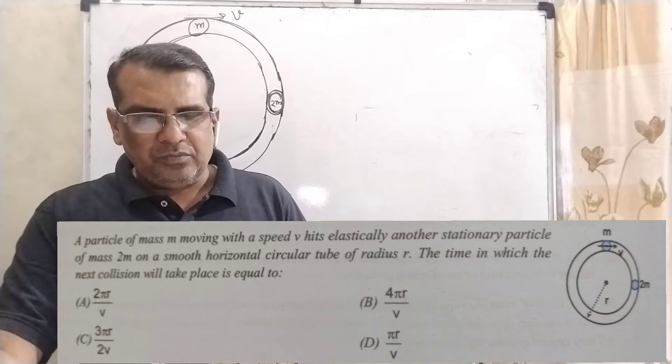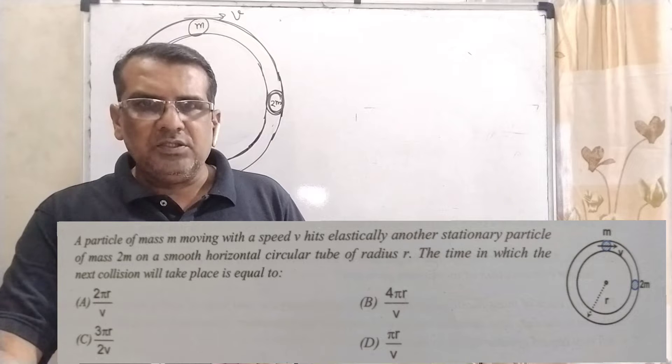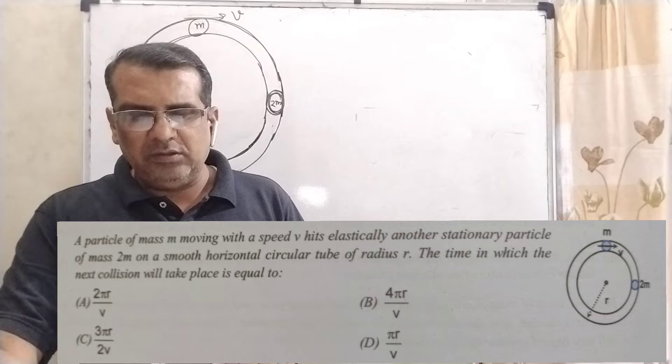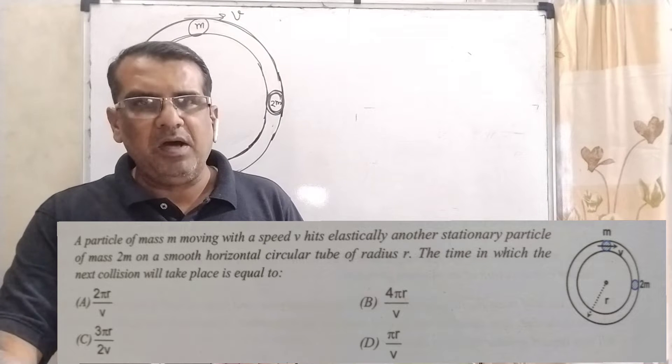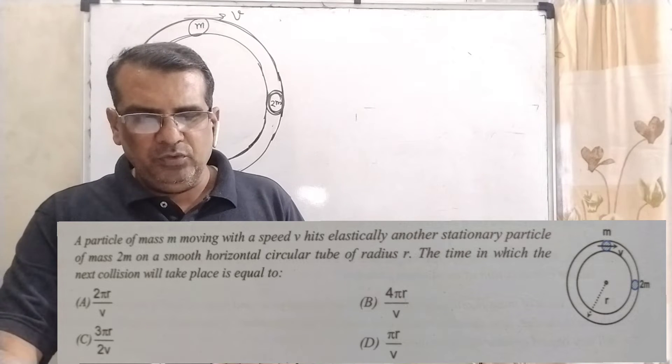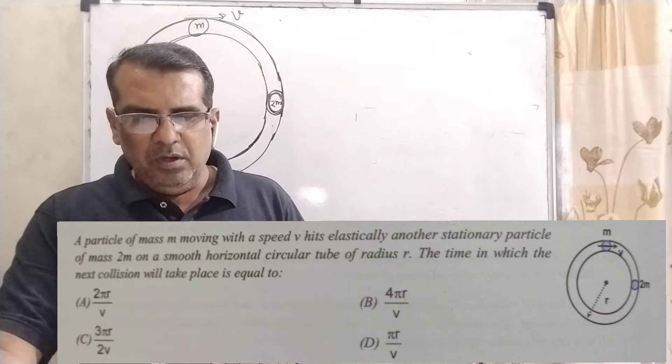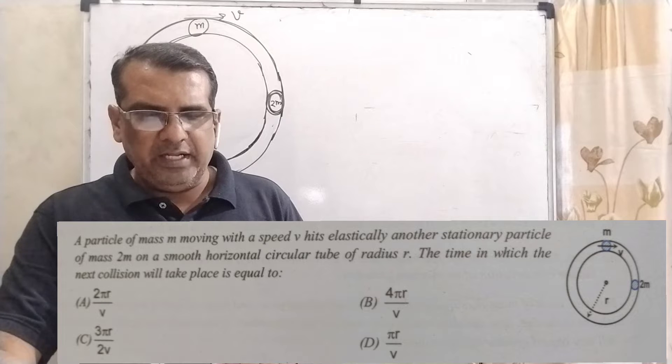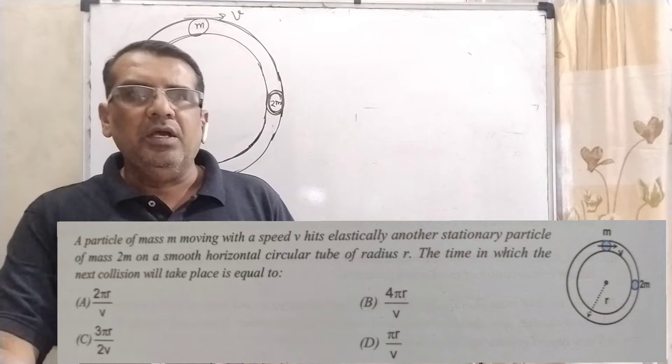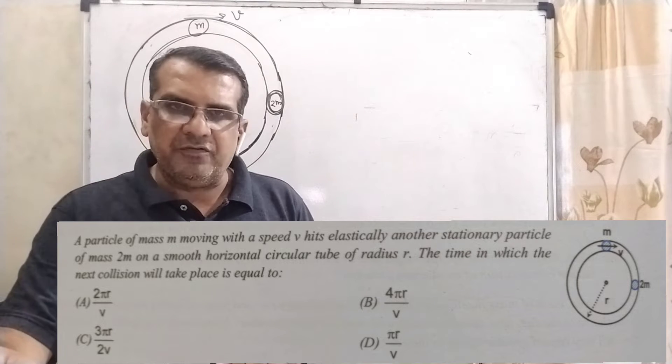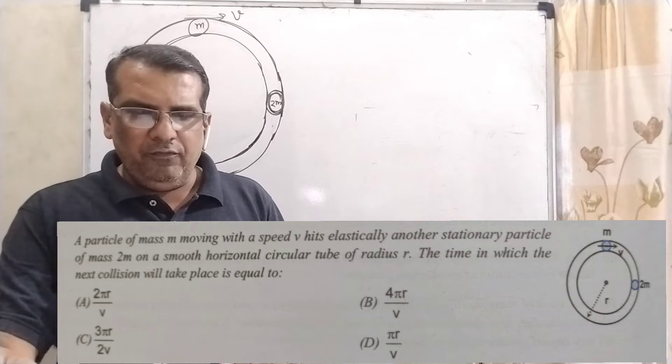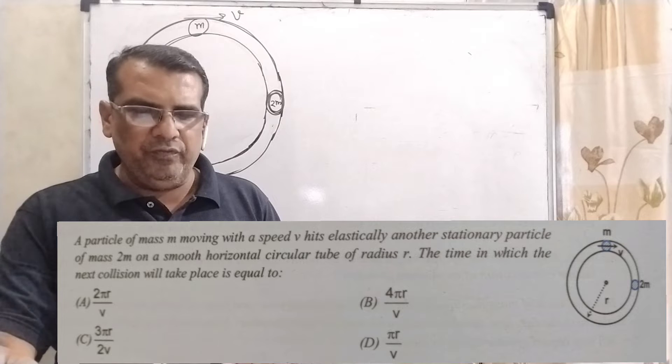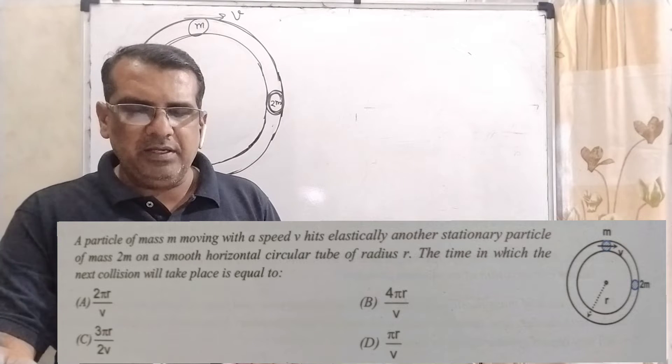Now here is the question. A particle of mass m moving with speed v hits elastically another stationary particle of mass 2m on a smooth horizontal circular tube of radius r. The time in which the next collision will take place is equal to. Here we have given four options. Option A: 2πr/v. Option B: 4πr/v. Option C: 3πr/2v. And option D: πr/v.